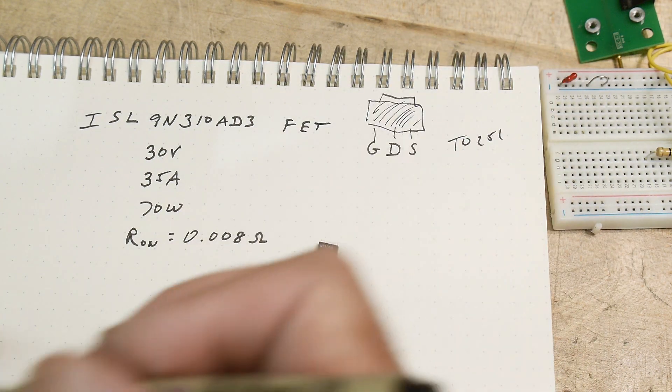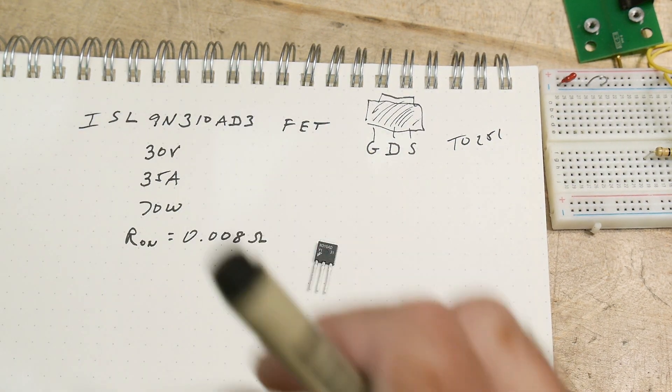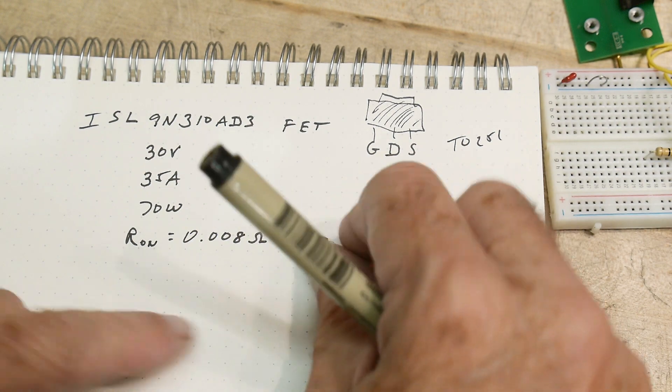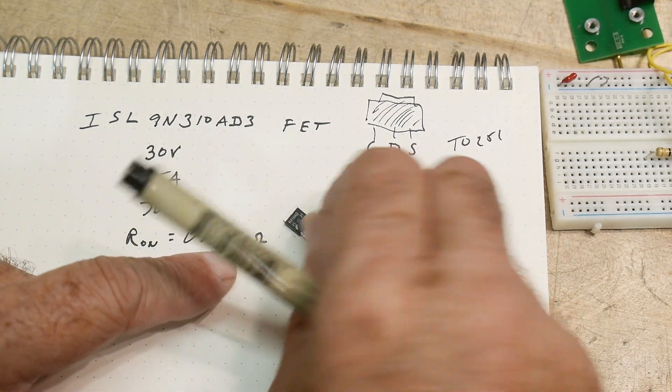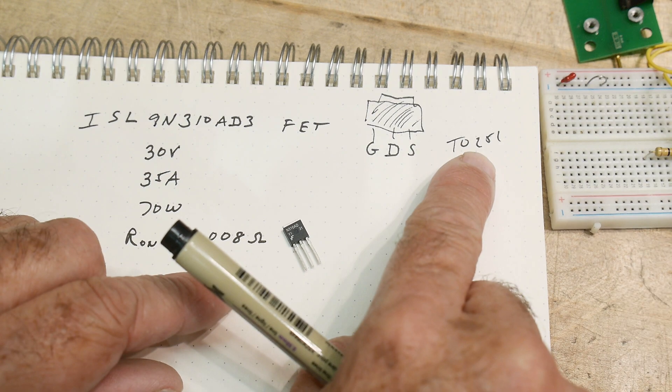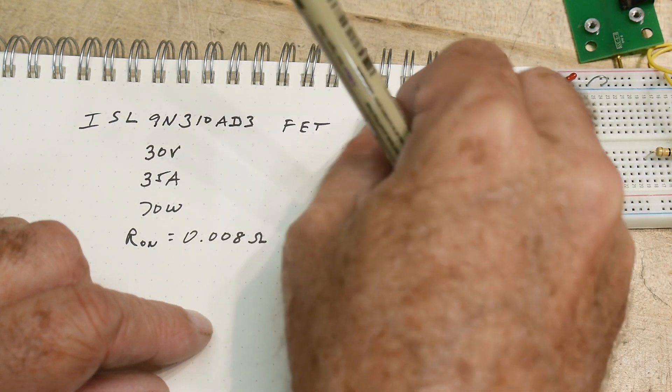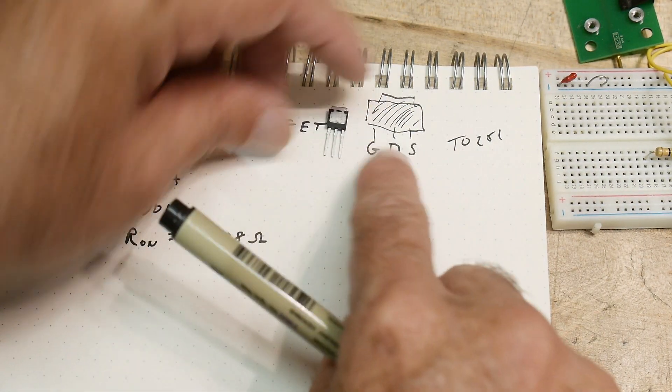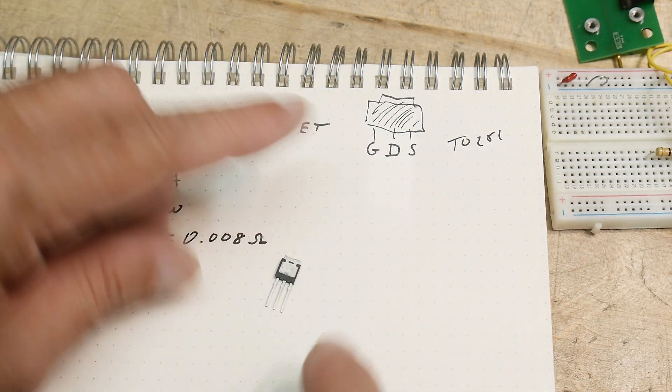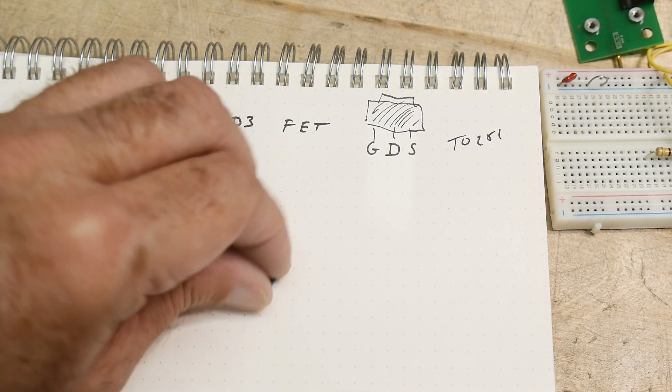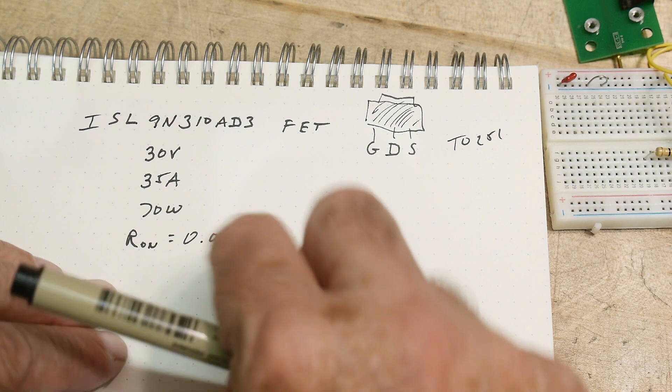And I don't know how I ended up with a hundred of them, but I've got a box of them. So they're cute little parts. They're in something called a TO251 package, and that's the package there. It's a gate drain source, and it's meant to be soldered down to a PC board.